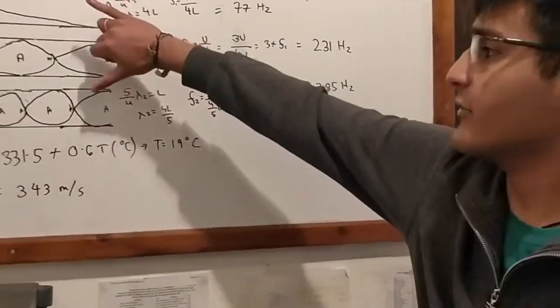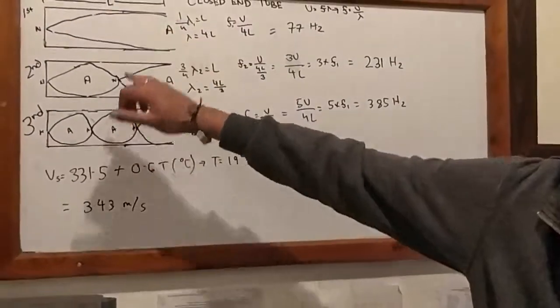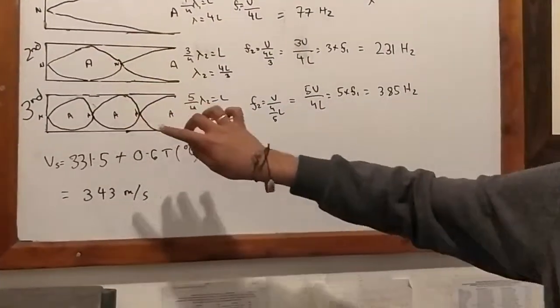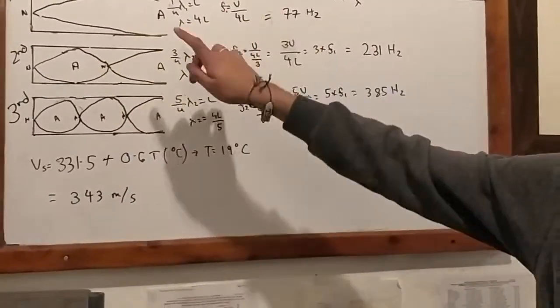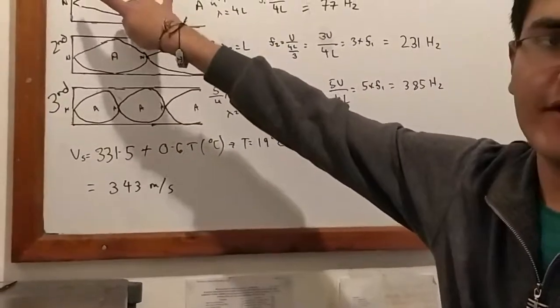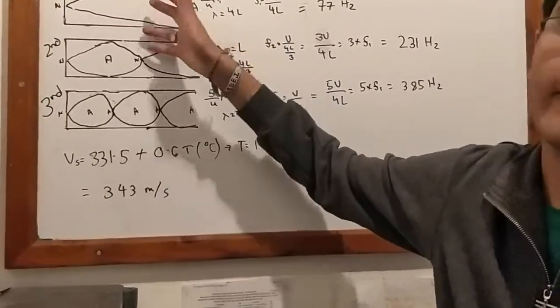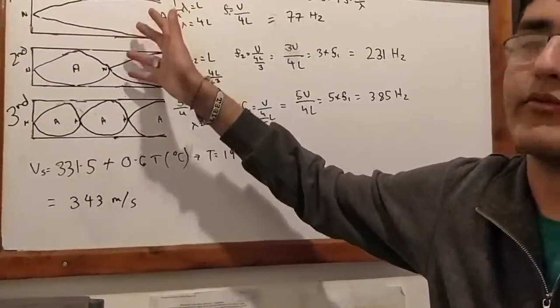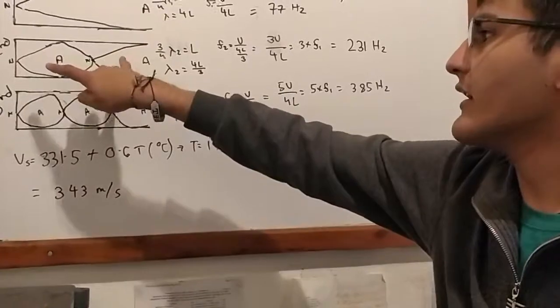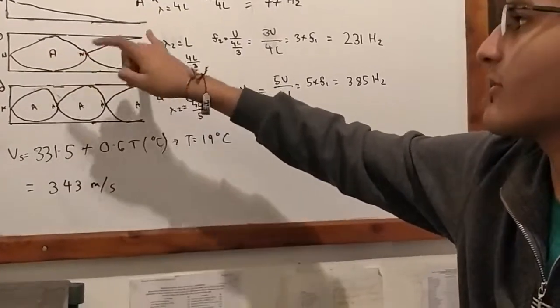Over here, I have three different harmonics for my closed-end tube: the first, second, and third harmonic. In the first harmonic of a closed-end tube, you have one-fourth of the wavelength equal to the length of the tube, which in our case is 1.12 meters.